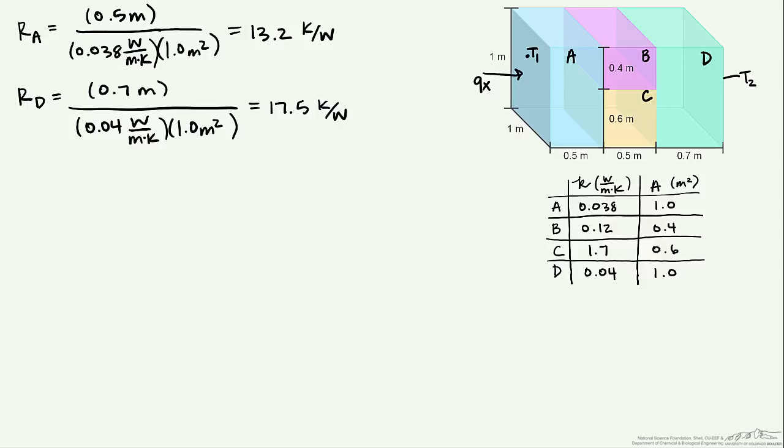However, now we're going to have to put an equivalent resistance for B and C. And so what this is going to equal is, for B, 0.12, here's our thermal conductivity, watts per meter kelvin. And this is multiplied by its area. And notice that this is just the inverse of the resistances we wrote before, obviously with their own numbers.